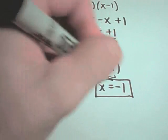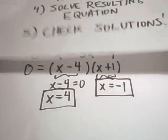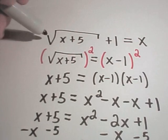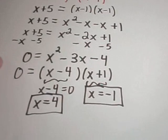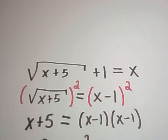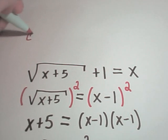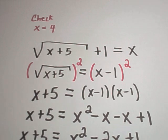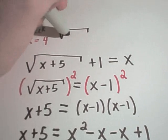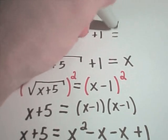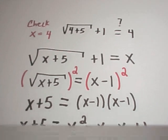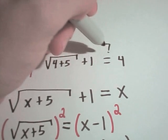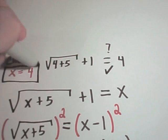These are potential solutions because they're solutions to the quadratic equation, so we have to check them. Here was the original equation. Let's check x equals 4 first. If I plug that in, I'll get square root of 4 plus 5 plus 1. I get 4 plus 5 which is 9, the square root of 9 is 3, and 3 plus 1 is 4. So yes, this value does work — that's a solution.